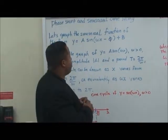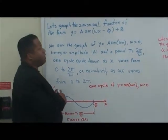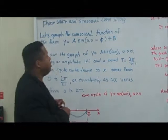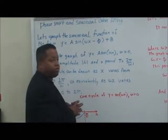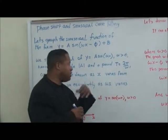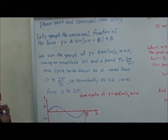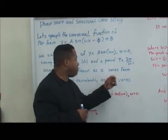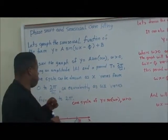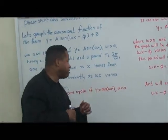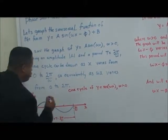We saw that the graph of y equals A times sine of ωx, where ω is greater than zero, has an amplitude of the absolute value of A, and a period of T equals 2π divided by ω. One cycle can be drawn as x varies from 0 to 2π over ω, or equivalently as ωx varies from 0 to 2π.